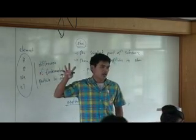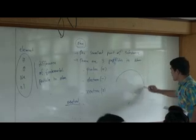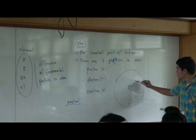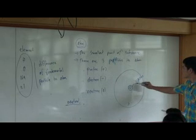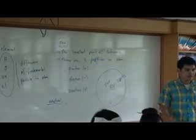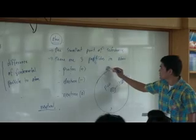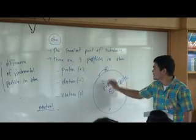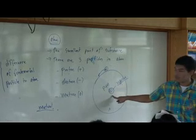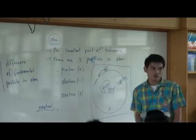These three particles are the fundamental particles of atoms. The difference between the number of protons, electrons, and neutrons in each element makes the difference between each element. Now I want you to look at the model of atoms — the iconic model. This is a circle. Inside the circle we have something called the nucleus. Inside the nucleus of atoms, there are protons and neutrons. Electrons are moving in a circle around the nucleus. This is the basic model of an atom.